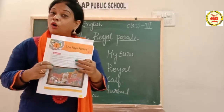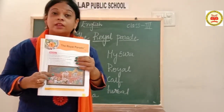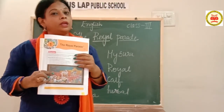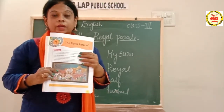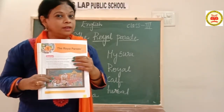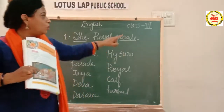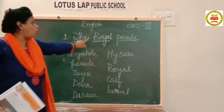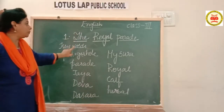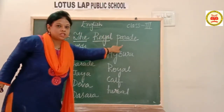Because you all have come to class 3, the author has given a very, very interesting story. Each and every bit you will enjoy a lot, children. So let me tell you the name of the lesson. Shall I tell you, children? The name of the lesson is — look on the page — The Royal Parade. Come on, read along with me: The Royal Parade.